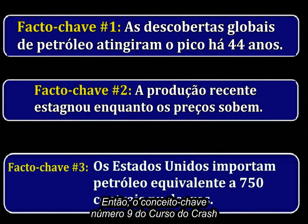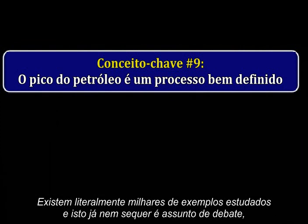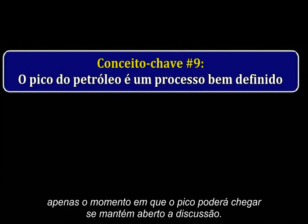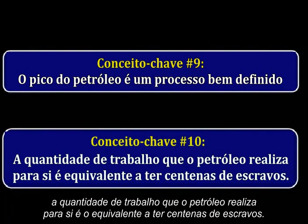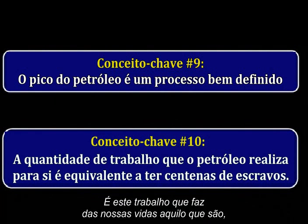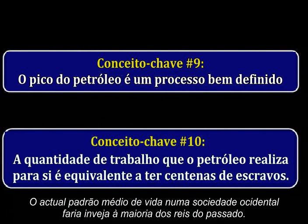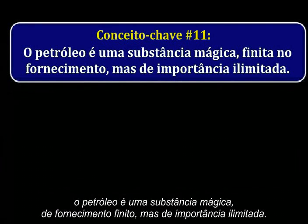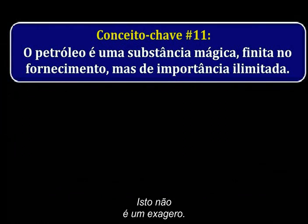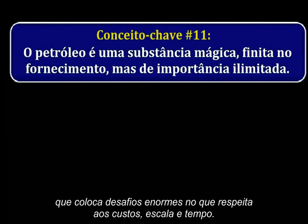Key concept number nine of the Crash Course: peak oil is a well-defined process that is nothing more than a physical description of how oil fields age. We have literally thousands of studied examples under our belts, and this is not open to debate — only when the peak might arrive is up for discussion. Key concept number ten, mostly hidden from us in plain sight: the amount of work that oil performs for you is equivalent to having hundreds of slaves. It is this work that makes our lives what they are — staggeringly comfortable by historical standards. The average middle class life in Western society today would be the envy of most kings in times past. Key concept number eleven: oil is a magical substance of finite supply but unlimited importance. This cannot be overstated. Transitioning from one fuel source to another is a devilishly expensive proposition posing enormous challenges with respect to cost, scale, and time.